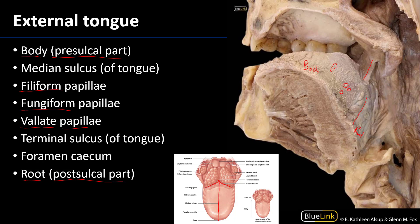On the illustration, we can see that the valate papillae form the final row of papillae before the terminal sulcus. On the cadaveric photograph, these valate papillae are a little less conceptually symmetrical than one would be led to believe through illustrations.